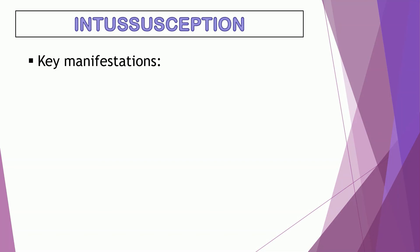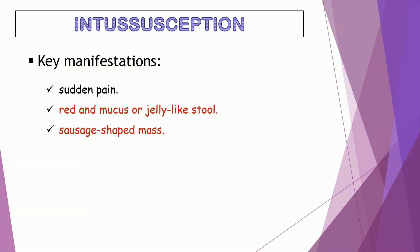Key manifestations: the earliest manifestation is sudden pain due to intestinal cramps. The stool is red, looks bloody, and mucus or jelly-like. Lastly, a sausage-shaped mass is found upon physical exam. Management: an enema is done by placing a small tube into the rectum. A barium enema is also used to confirm the diagnosis. As a treatment, fluid or air is gradually added to push the intestine back to its normal position. If it is not successful, surgery will be the next option.